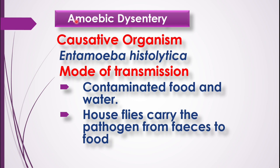The name of the disease is amoebic dysentery. The causative organism is Entamoeba histolytica. The disease is spread through contaminated food and water. If the food and water happen to be contaminated with the fecal material of the patient, there is a possibility of the disease spreading to a healthy person.